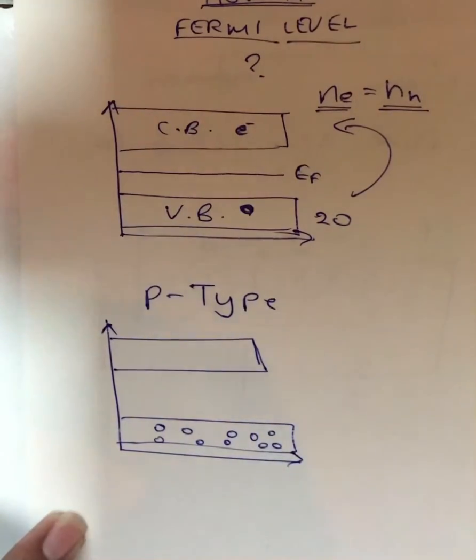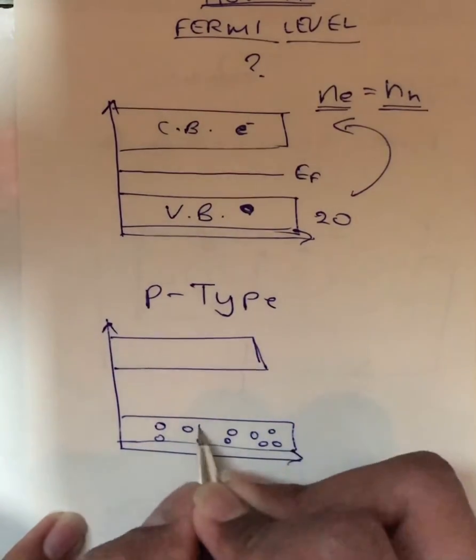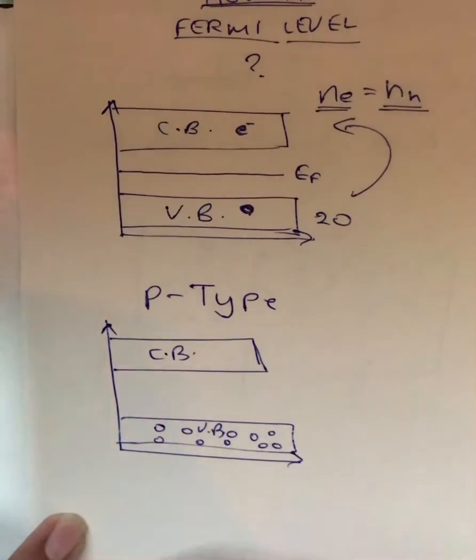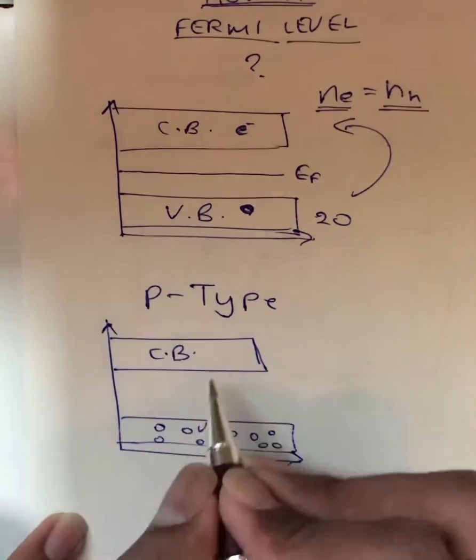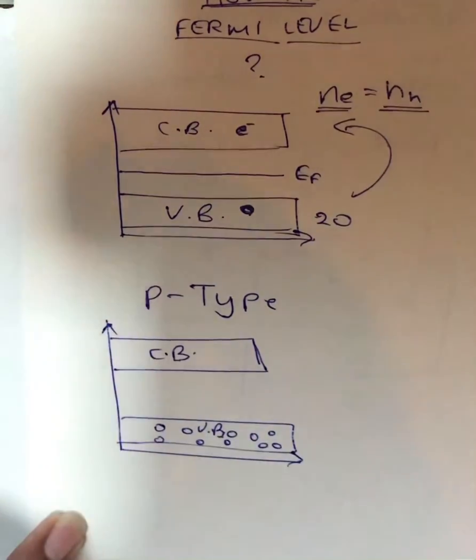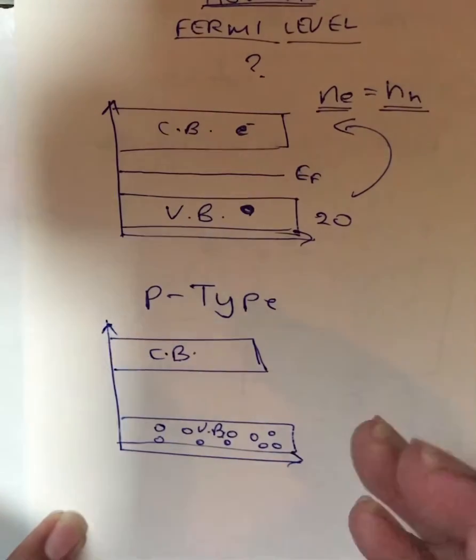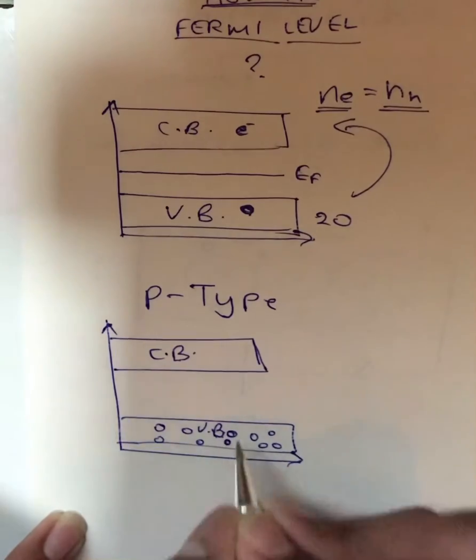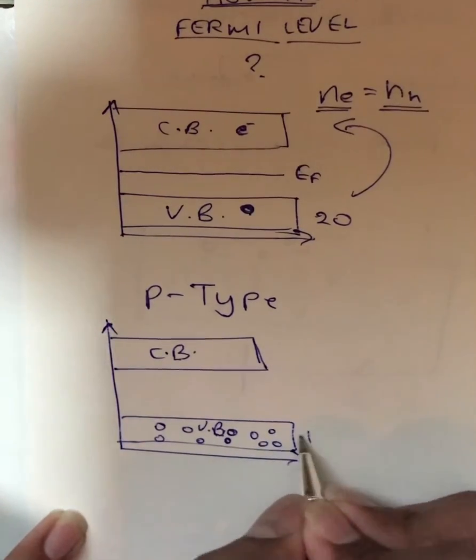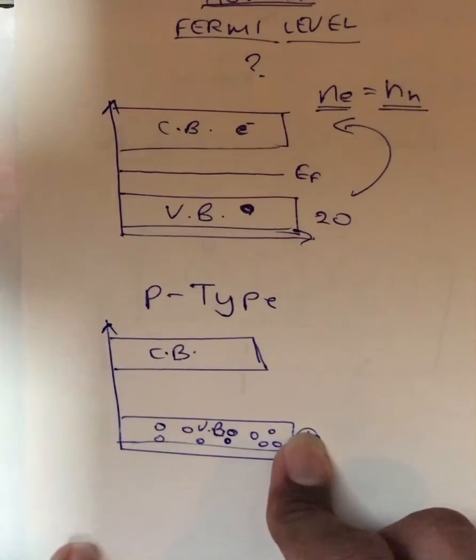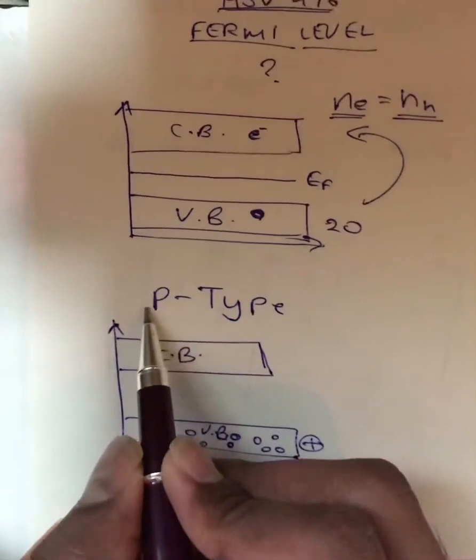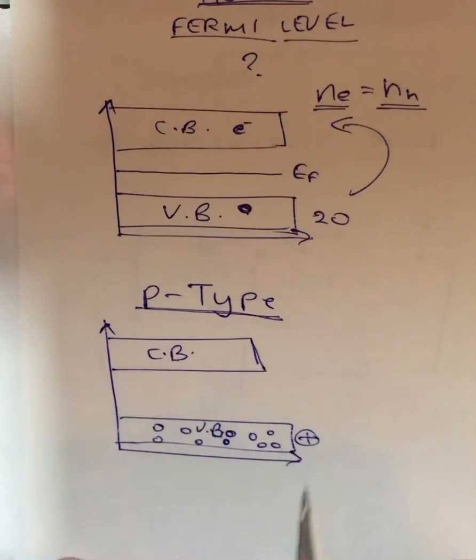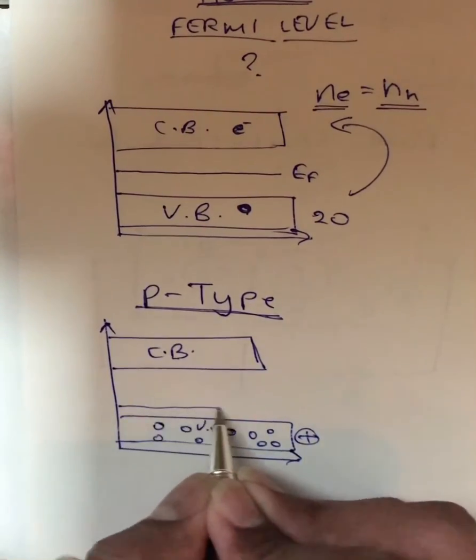Therefore there is more positive charge in the valence band as compared to the conduction band. In conduction band there are very few electrons, and due to the addition of trivalent impurity we get more charge in this valence band. So positive charge is more in this valence band and the charge carriers in the p-type semiconductor are holes. Therefore the Fermi level will be nearer to the valence band.